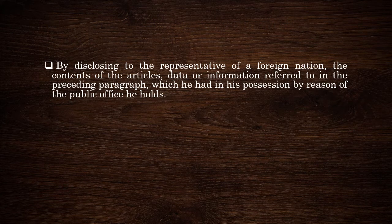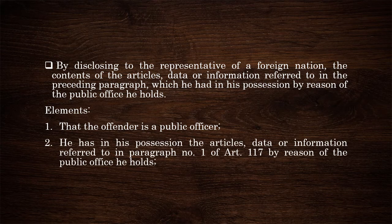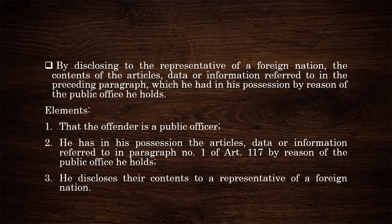The second way of committing espionage is by disclosing to the representative of a foreign nation the contents of the articles, data, or information referred to in the preceding paragraph, which the offender had in his possession by reason of the public office he holds. The elements of this second way are: number one, the offender must be a public officer; number two, as such public officer, he has in his possession the articles, data, or information referred to in paragraph 1 of Article 117 by reason of the public office he holds; and number three, the offender discloses their contents to a representative of a foreign nation.